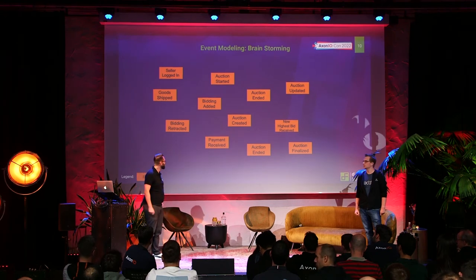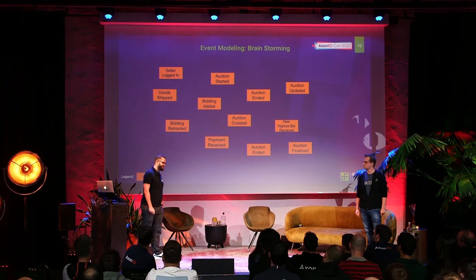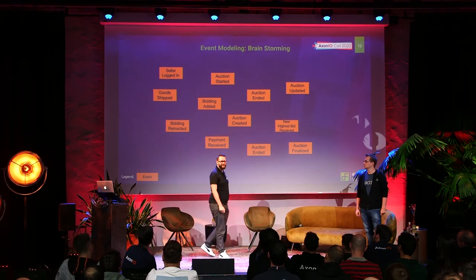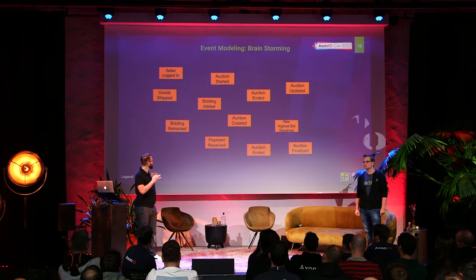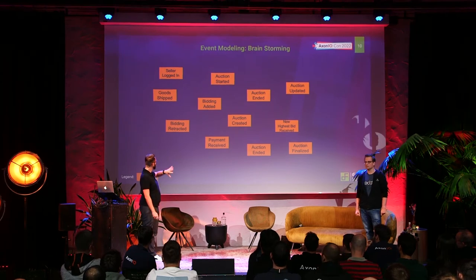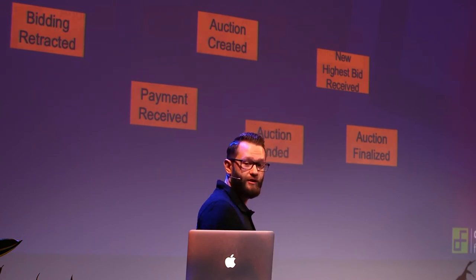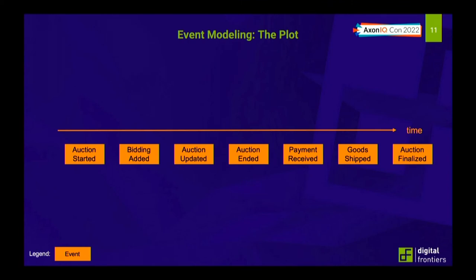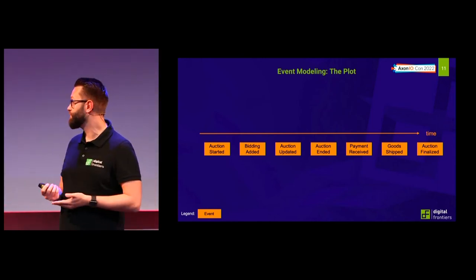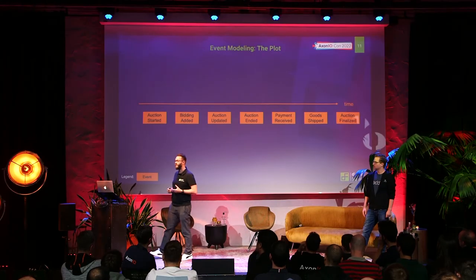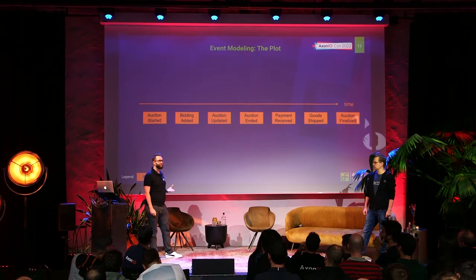For our example, let's assume they're not the same: an auction is ended when the time is up and the final bidder wins, but it's finalized only after payment and goods have been exchanged. We also question 'seller logged in' — is that really a data-changing event? For now, let's assume it's not. After removing duplicates and non-events and putting them on the timeline, we have our plot. An auction is first started, people bid and the auction is updated with the highest bid, then the auction ends, the seller receives money, the buyer receives goods, and finally the auction is finalized.